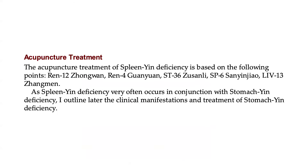The acupuncture treatment of spleen EIN deficiency is based on the following points: REN 12, REN 4, Stomach 36, Spleen 6, and Liver 13. As spleen EIN deficiency very often occurs in conjunction with stomach EIN deficiency, we will later outline the clinical manifestations and treatment of stomach EIN deficiency.